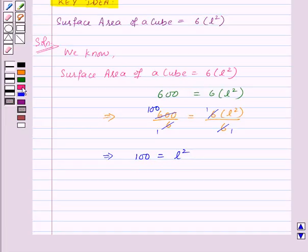Now taking square root on both the sides, we get square root of 100 equal to square root of L square. So this gives 10 equal to L.